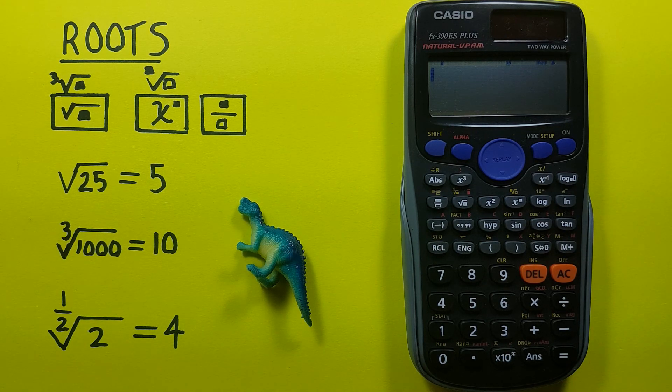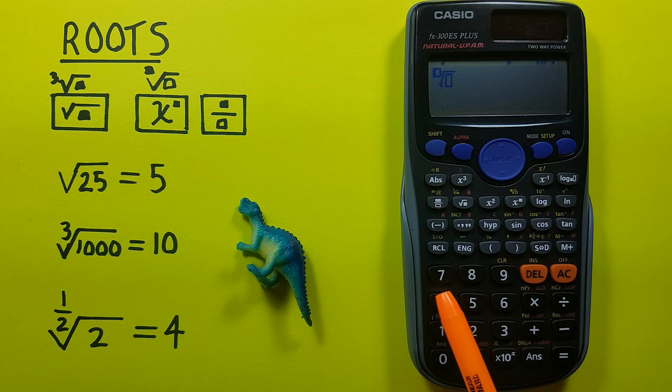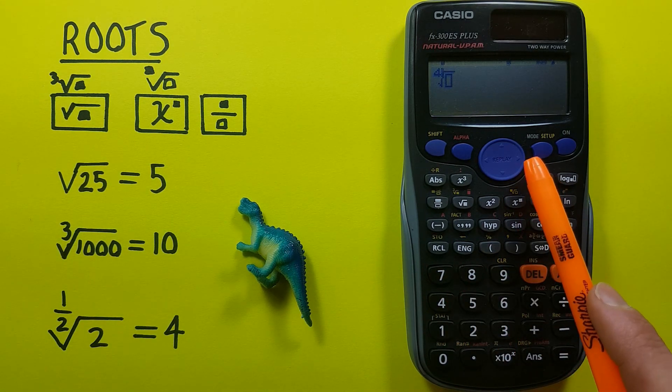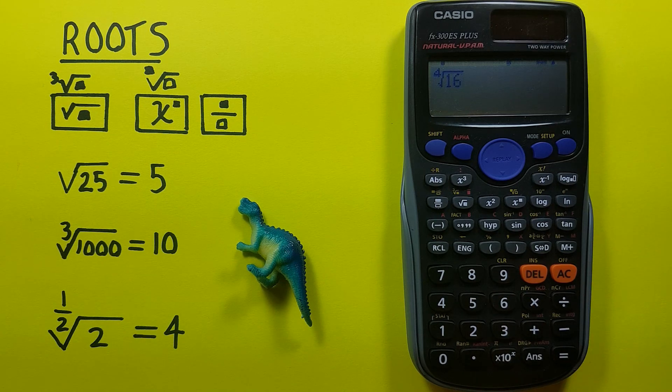We can also use this method to find whole number roots. So let's say if we wanted to find 16 to the fourth root, again we would enter it with shift root, put 4 in the box there, scroll to the right, and enter 16 in the second box.